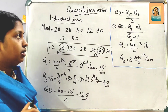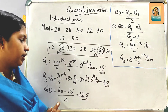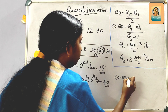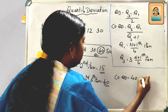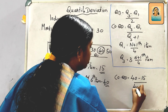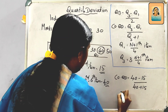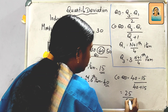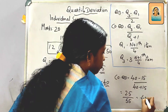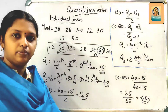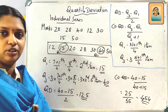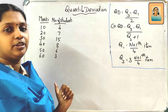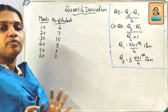QD = 25 by 2 = 12.5. In the discrete series, we have frequencies, so we use cumulative frequency values.